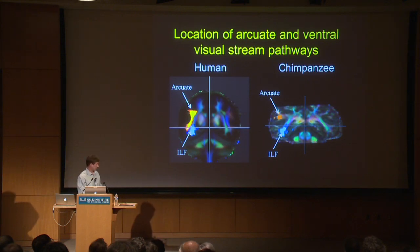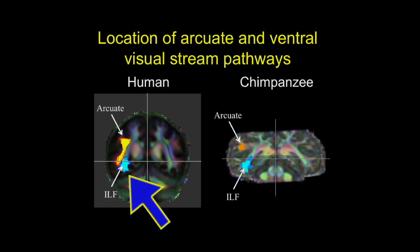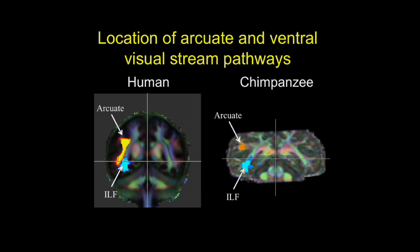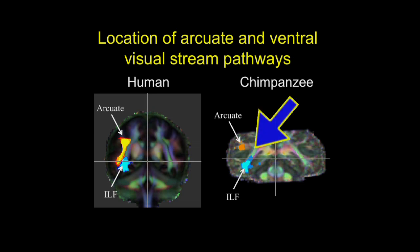Here's further evidence that the arcuate fasciculus is pushing visual pathways around in the human brain. The inferior longitudinal fasciculus, the ILF, is the ventral visual stream pathway involved with processing the identity of seen objects. In a coronal section, you can see that the arcuate fasciculus butts right up against that visual system pathway in humans. But in chimpanzees, those two pathways are separate at this point, and the angle of the ILF is much different — at a much steeper angle in humans. We think that's because the arcuate is pushing that pathway in a ventromedial direction.